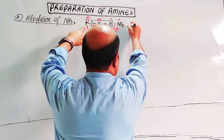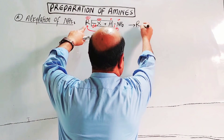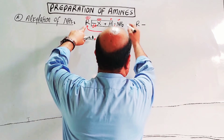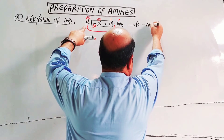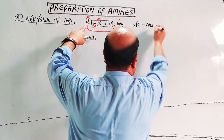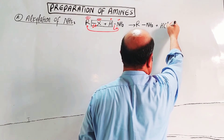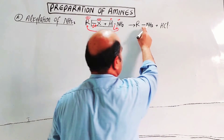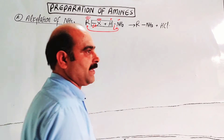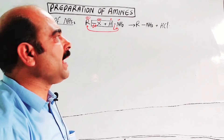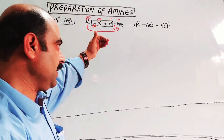The product of this reaction is R-NH2 plus HCl. This is an alkyl amine, also called a primary amine. A primary amine is formed in this first step.